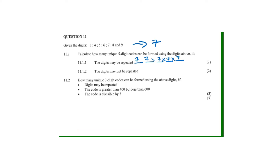We then multiply them together: seven times seven times seven times seven times seven, which is seven to the power of five. From the calculator, that equals sixteen thousand eight hundred and seven unique codes.